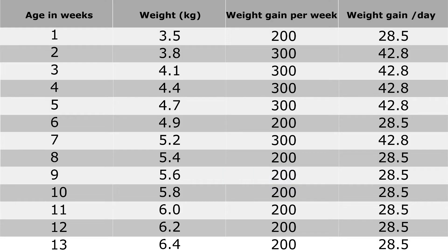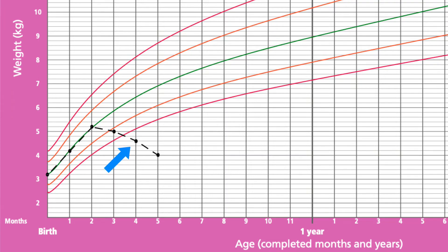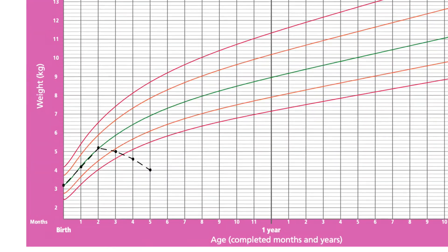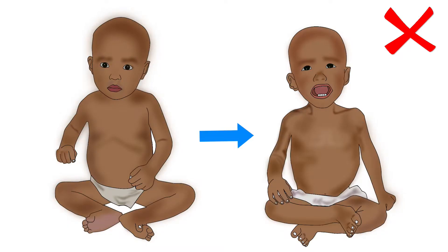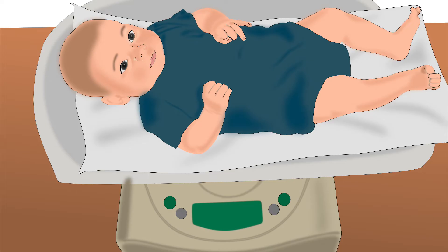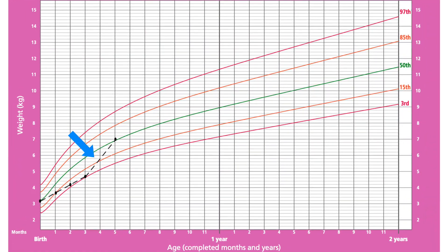When interpreting growth charts, be alert for situations that suggest risk. A sharp decline in the growth line indicates a growth problem. Even if a child is overweight, he should not have a sharp decline in his growth, as losing too much weight rapidly is not healthy. An overweight child should maintain weight while increasing in length. On the other hand, a rapid incline in the growth line is sometimes healthy.